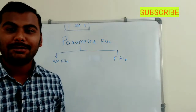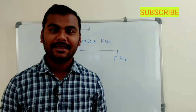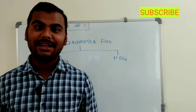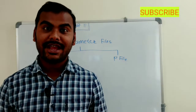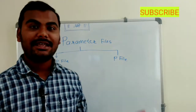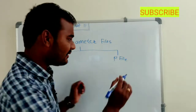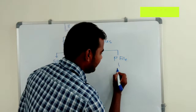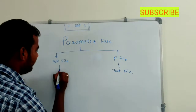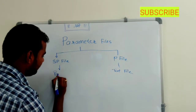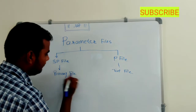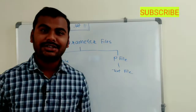Why do we have these two kinds of parameter files in our Oracle database? The first thing is about the SPfile — the SPfile is a binary file which can be understood by the Oracle database. The PFile is our text file. So SPfile is binary and PFile is text.